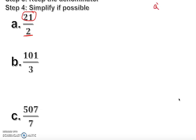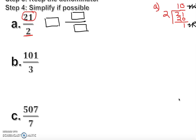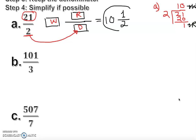For problem A, as a side note I'll do the long division: 2 divided into 21. 2 goes 10 times — 10 times 2 is 20 — and 1 is left over. So the remainder is 1 and the whole number is 10. A mixed fraction has a whole number, a remainder as the new numerator, and the same denominator — denominators never change. So the answer is 10 and 1/2.